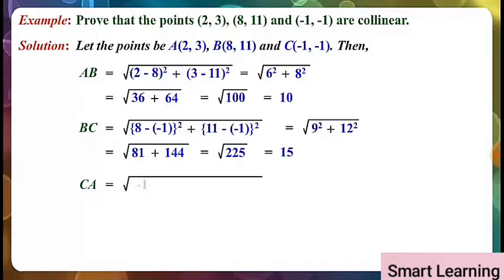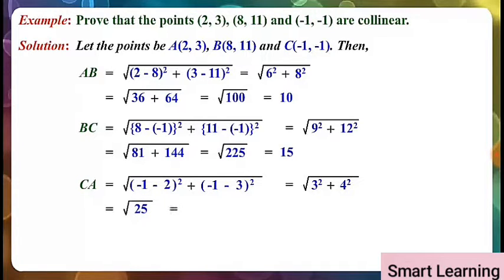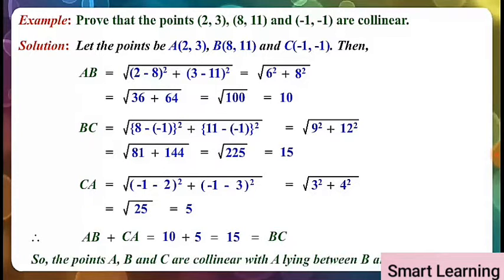CA is equal to under root of (-1 minus 2) whole square plus (-1 minus 3) whole square, equal to under root of 3 squared plus 4 squared, equal to under root 25, equal to 5. Therefore AB plus CA equals 10 plus 5 equals 15 equals BC. So the points A, B and C are collinear, with A lying between B and C.